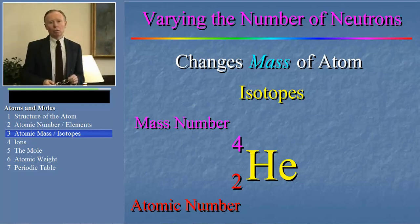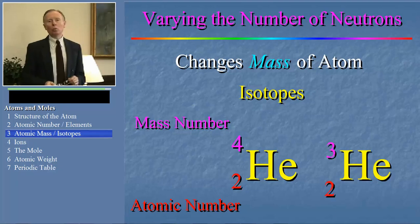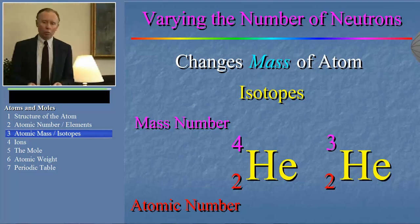Let's look at the symbol for another isotope of helium now. For example, here's the symbol of an atom of helium that has only one neutron in the nucleus.